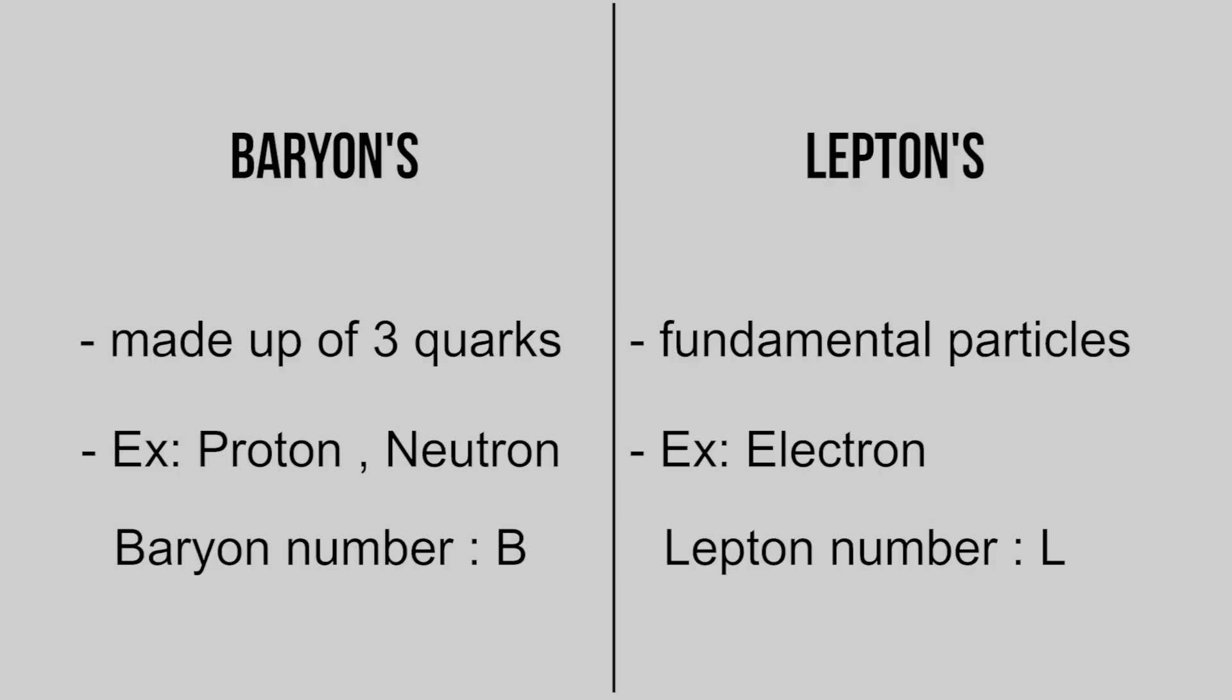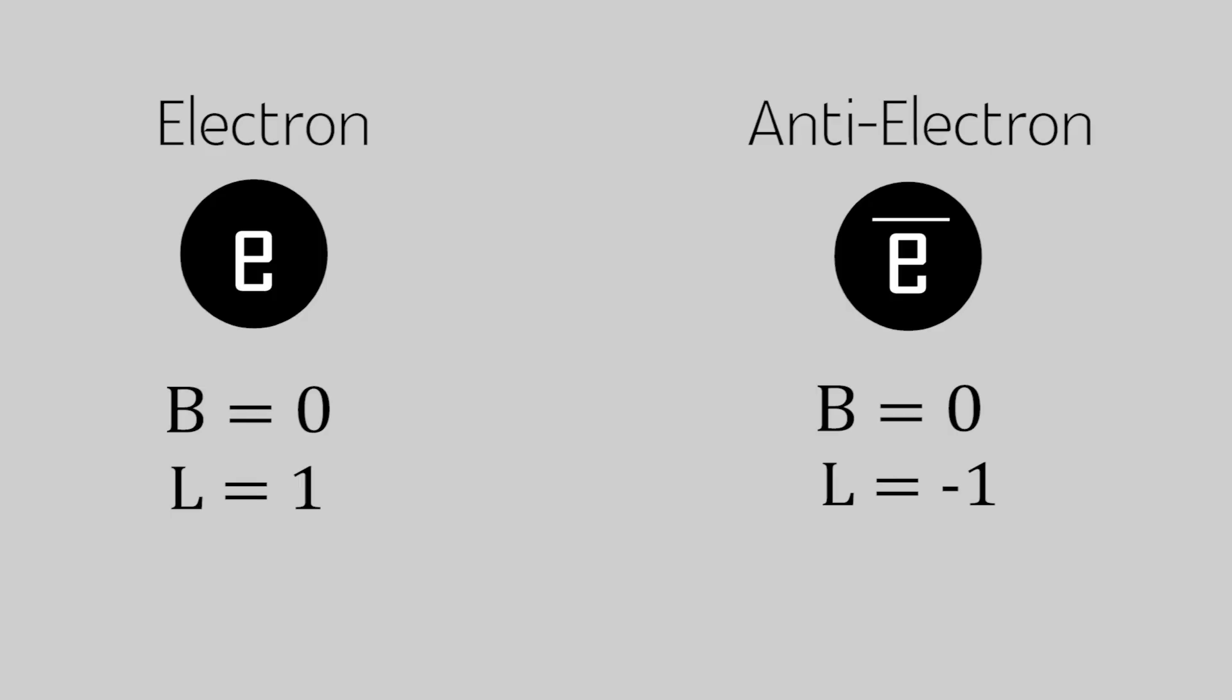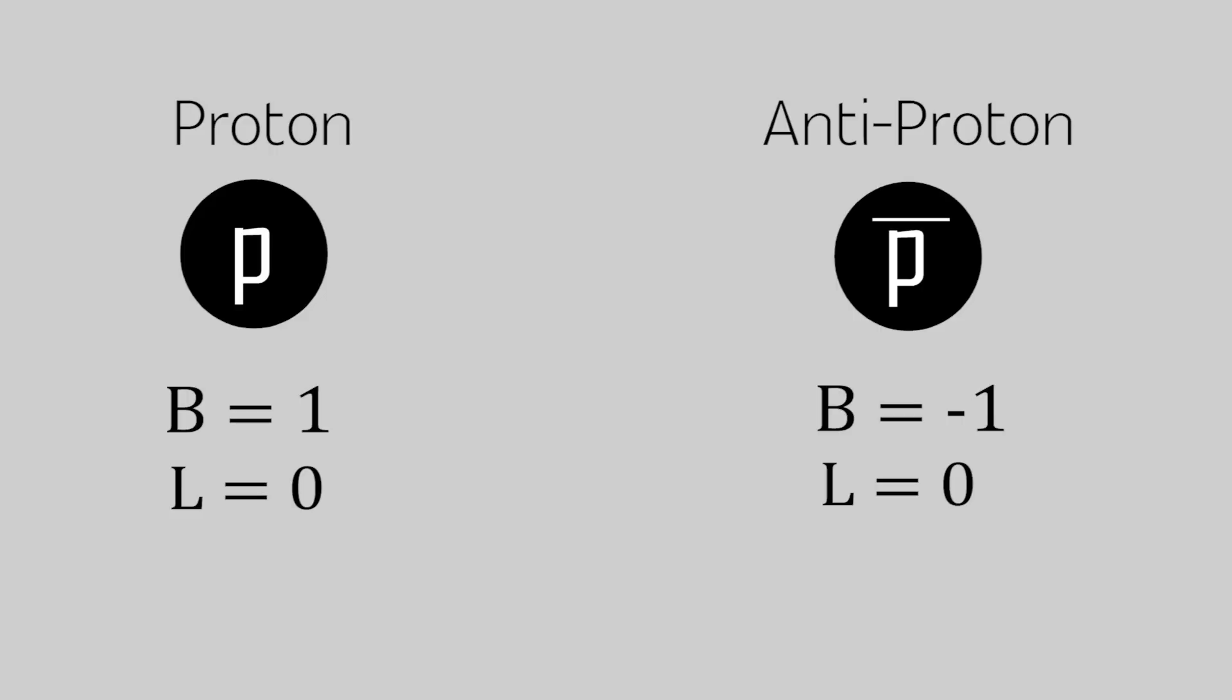The baryon and lepton numbers for electron, proton, and neutron are as follows: as electron is not a baryon, its baryon number is zero. As proton and neutron are not leptons, their lepton numbers are zero.